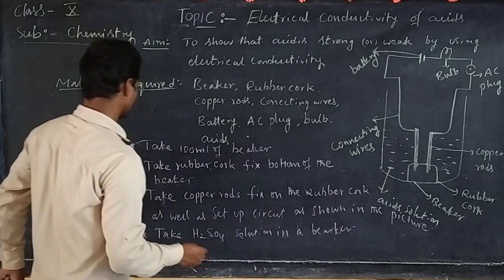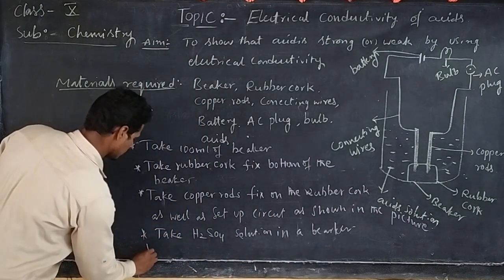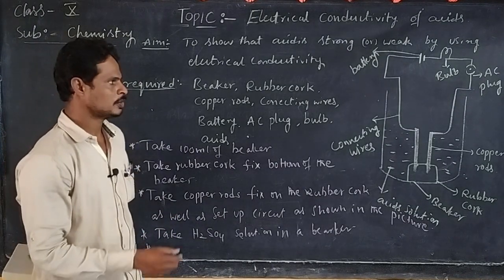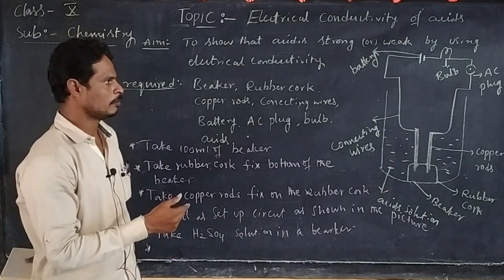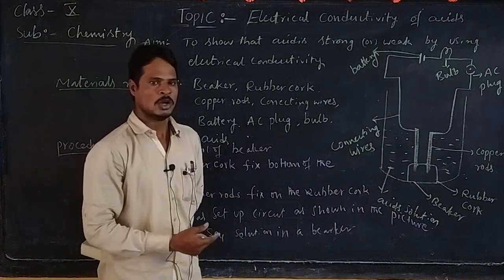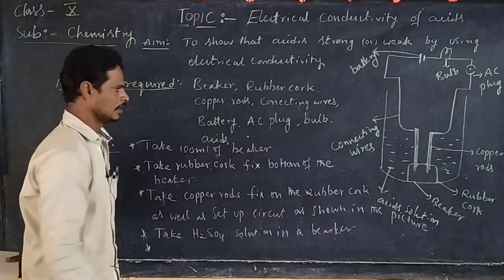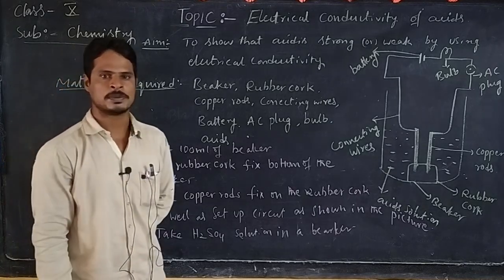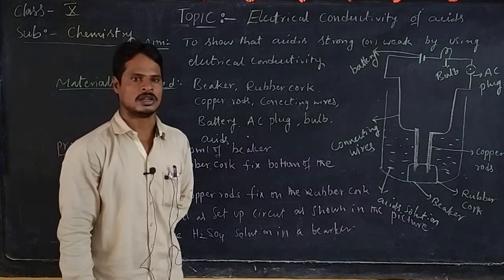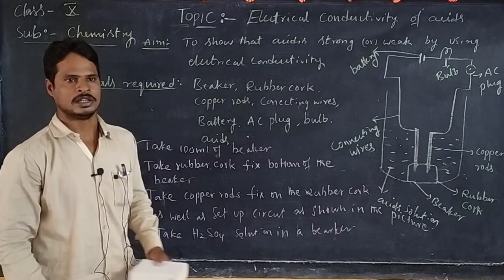When we switch on the circuit, we notice that the bulb glows brightly. The reason is that sulfuric acid produces H⁺ ions, and these H⁺ ions cause it to conduct electricity.